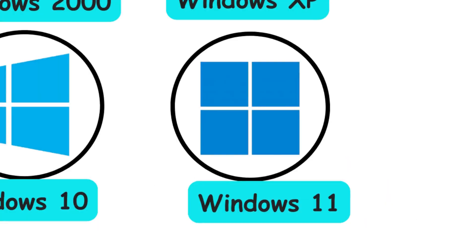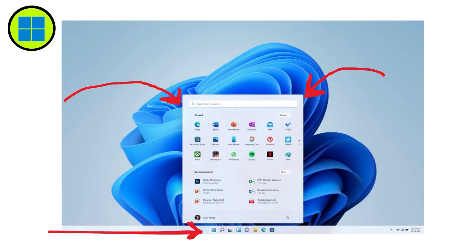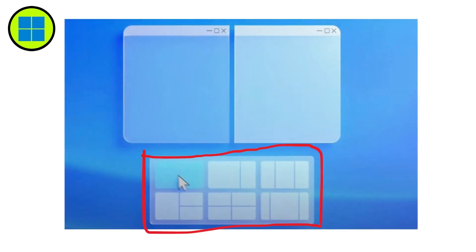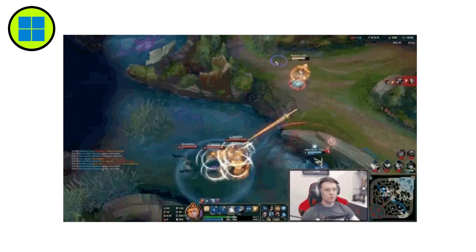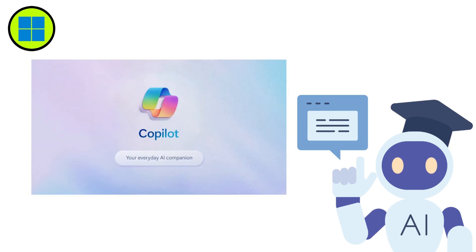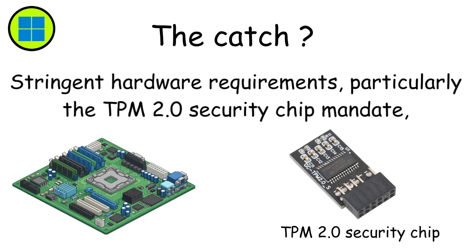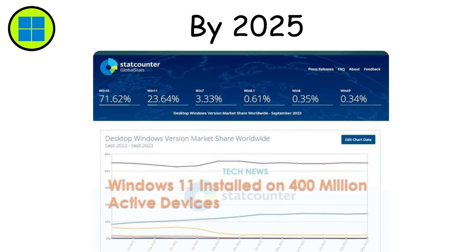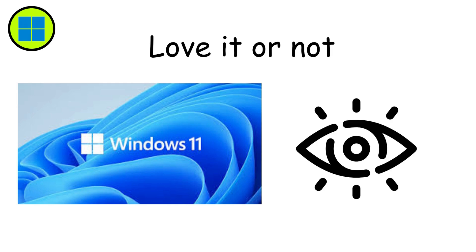Windows 11, 2021. Windows 11 rolled out in 2021, giving Windows a contemporary makeover. Rounded corners, gentle shadows, and a centered start menu created a fresh aesthetic. Snap layouts enhanced multitasking by offering preset window arrangements at the hover of your cursor. File Explorer gained tabbed browsing, reducing window clutter when managing files. Gaming performance improved through DirectStorage and Auto HDR, while the Copilot AI assistant pointed toward future possibilities. The catch? Stringent hardware requirements — particularly the TPM 2.0 security chip mandate — excluded countless older but functional computers from upgrading. By 2025, roughly 400 million devices run Windows 11, though many users still prefer Windows 10.